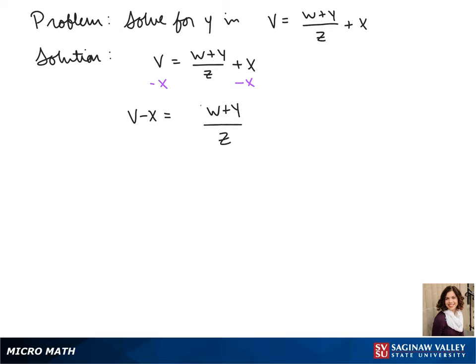Then to get the w plus y by itself, we multiply both sides by z. So we get z times v minus x equals w plus y.